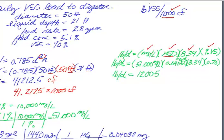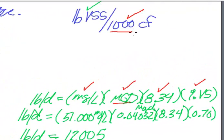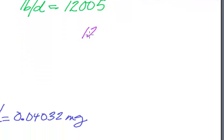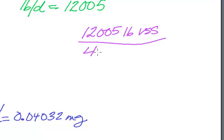So I've got both pieces now, pounds of volatiles and my digester space. We're just going to take those two numbers, and we are going to divide one by the other. So it's pounds of volatiles. So I have 12,005 pounds of volatile solids divided by my digester space. I'm just going to go ahead and do this in cubic feet, divided by 41,212.5 cubic feet.